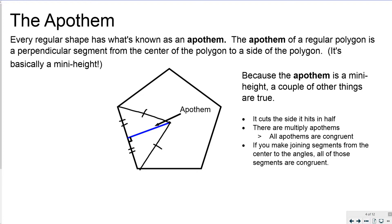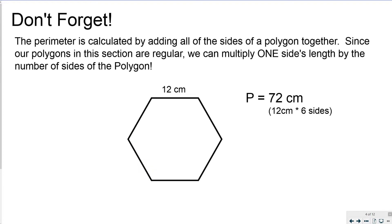Don't forget that the perimeter is calculated by adding all the sides of a polygon together. Since our polygons in this section are regular, we can multiply one side's length by the number of sides. In this case the perimeter is 72 centimeters because we have a 12-centimeter side times 6 sides.